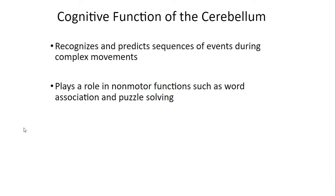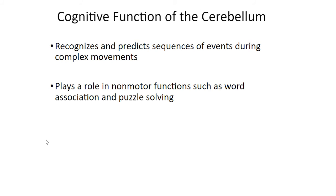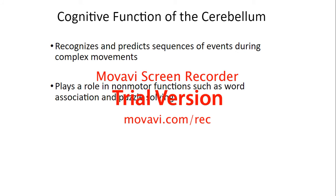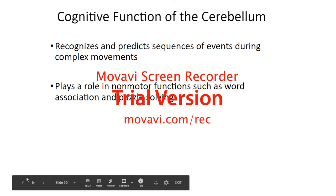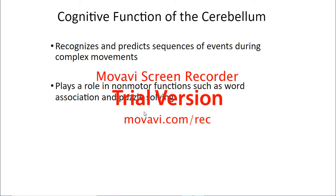The cognitive function of the cerebellum: the cerebellum recognizes and predicts sequences of events during complex movements, and plays a role in non-motor functions such as word association and puzzle solving. The cerebellum plays a very important role in coordinating body movements, but it also plays a role in non-motor cognitive functions such as word association and puzzle solving.